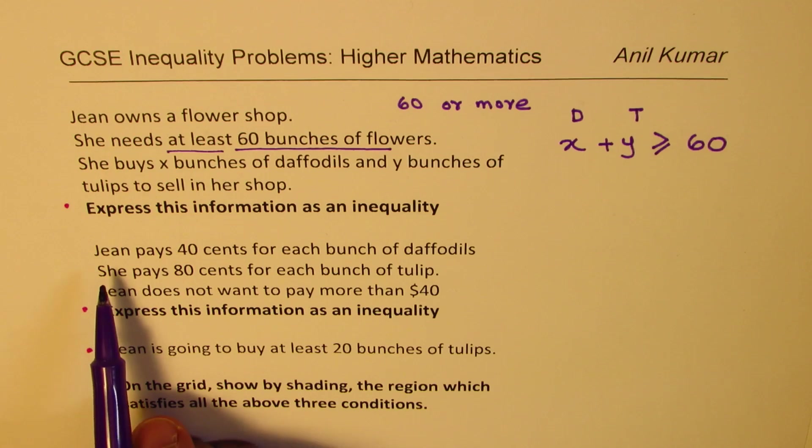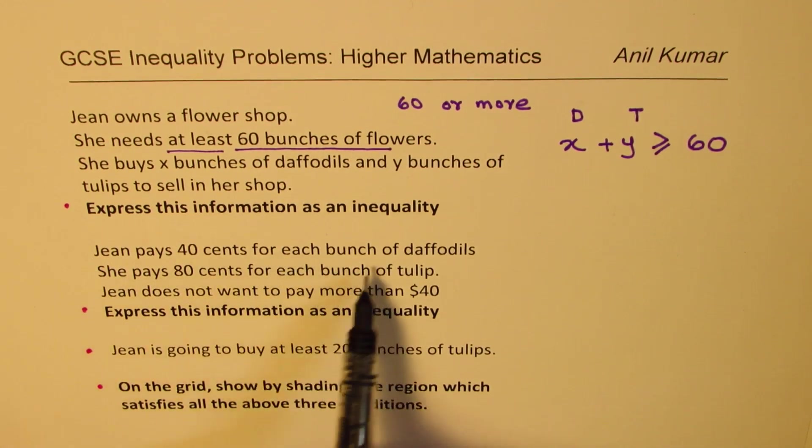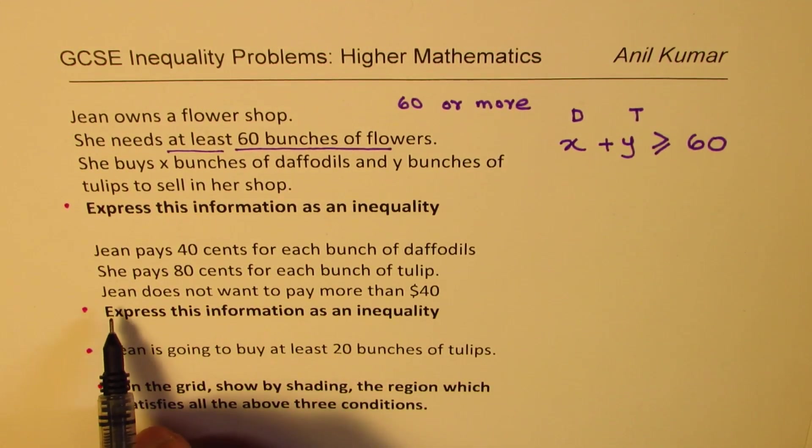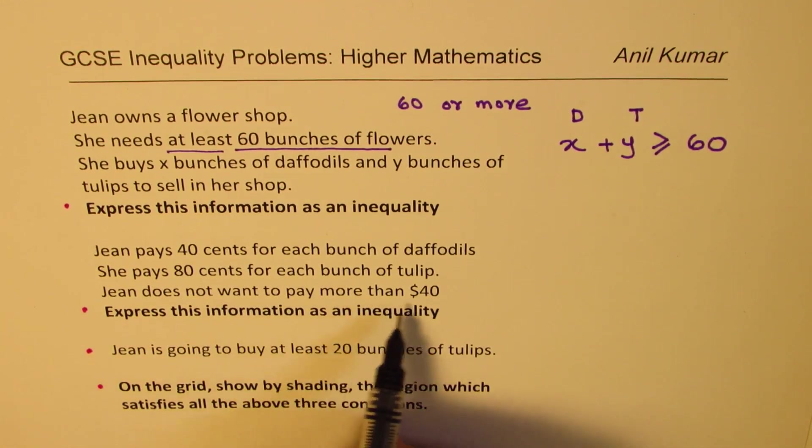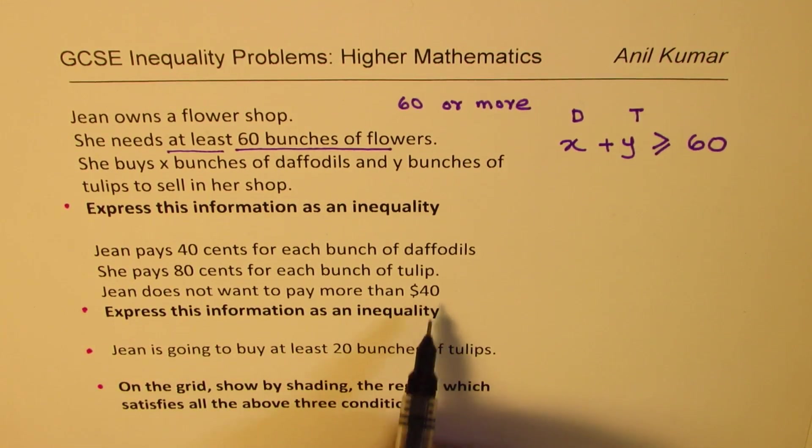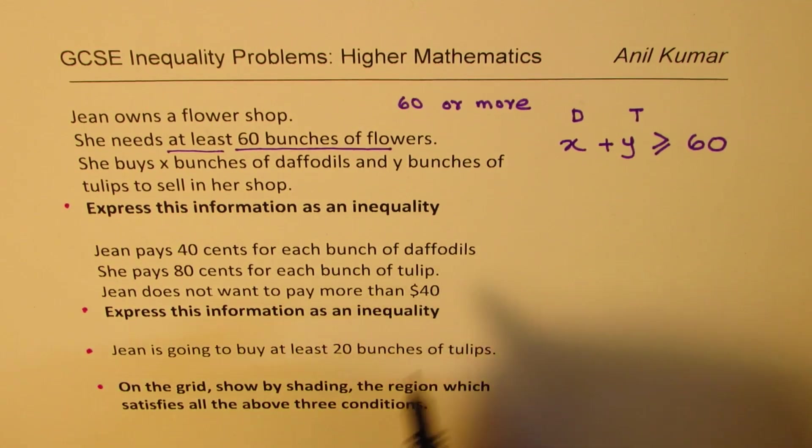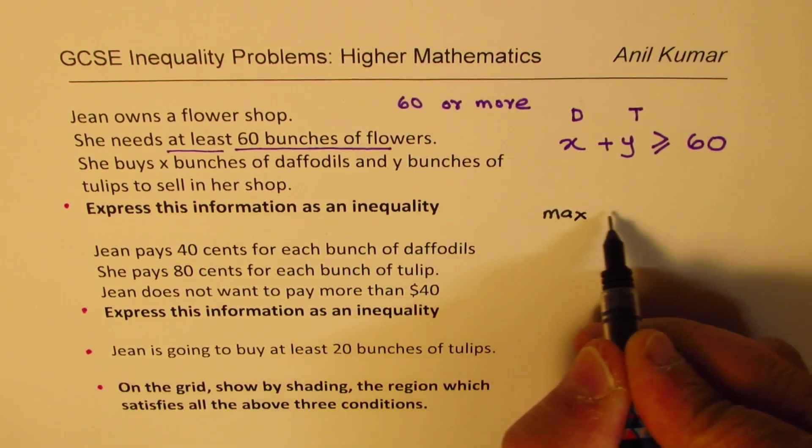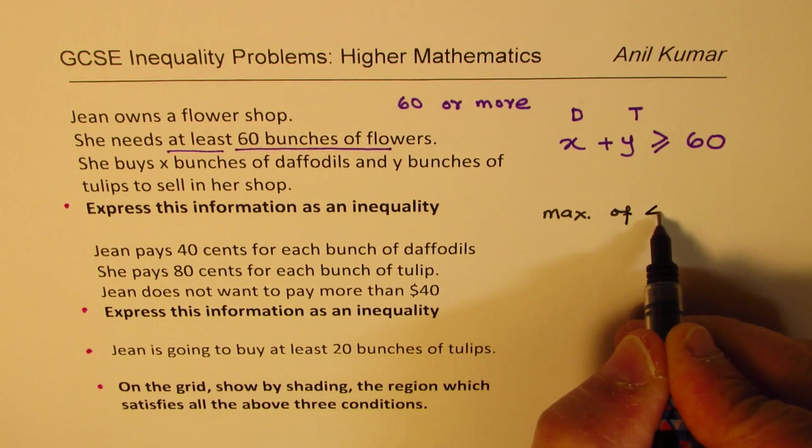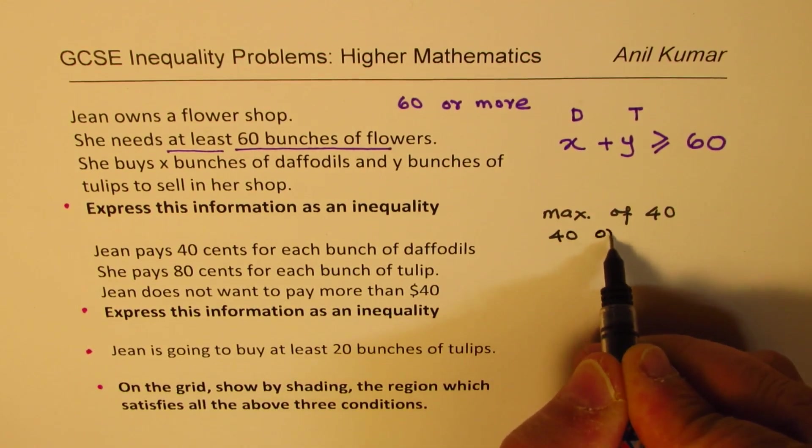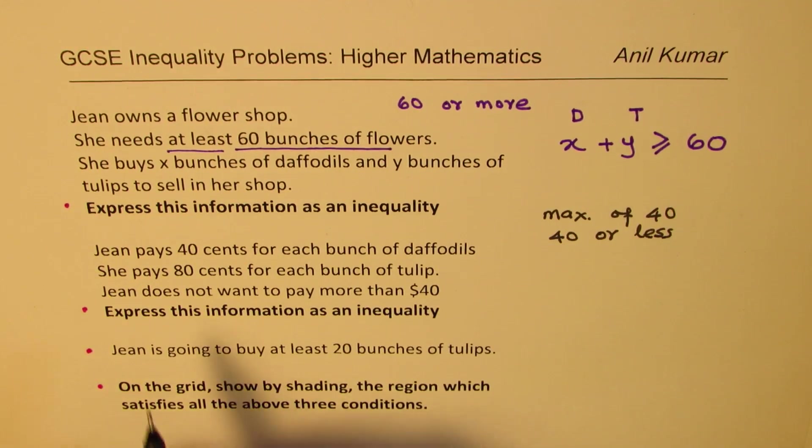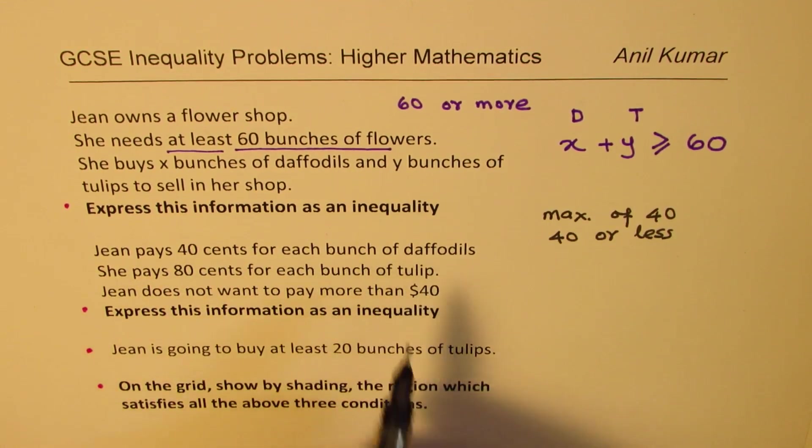Next. Jean pays 40 cents for each bunch of daffodils. She pays 80 cents for each bunch of tulips. Jean does not want to pay more than $40. So that means that is a maximum payment. It really means maximum of $40, that means 40 or less.